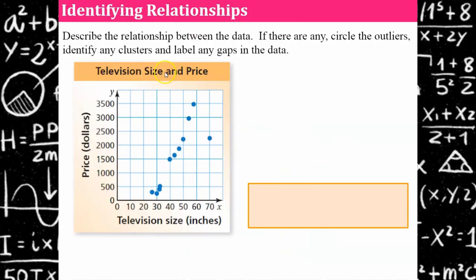Your turn. I would like you to describe the relationship between the data and this television sizes and price. I would like you to circle or list on your paper if you see any outliers. Identify if you think there are any clusters before we go over what a cluster is and could you find any gaps in the data and if so label it. We'll talk about that in a minute. Go ahead and look at the graph and see what you come up with. Come back and hit play when you're ready to talk about it.